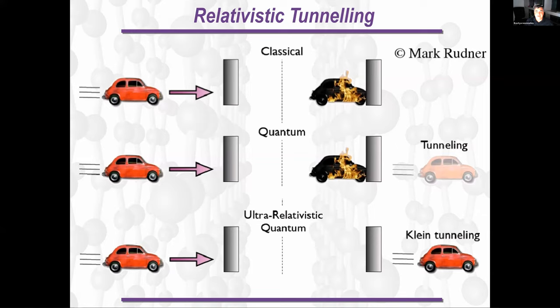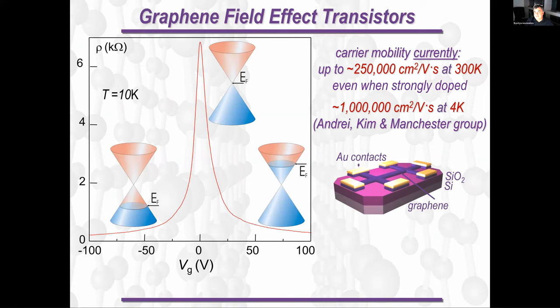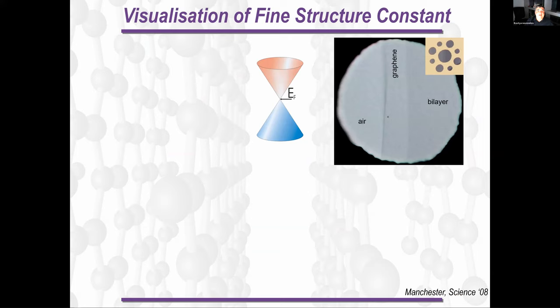Because of that, there are a number of interesting applications for graphene. So electrons in graphene, because they can penetrate through any barrier, they cannot be stopped. Then it means that the figure of merit for the performance of transistors, which is called mobility, in silicon is usually 1,000, in graphene it can be 1 million.